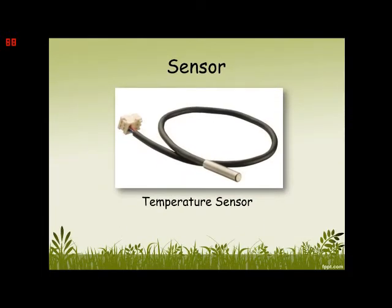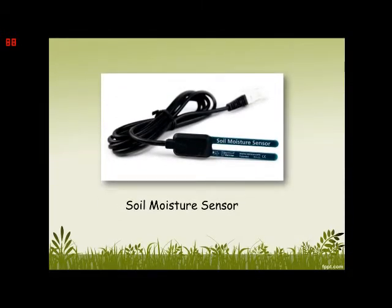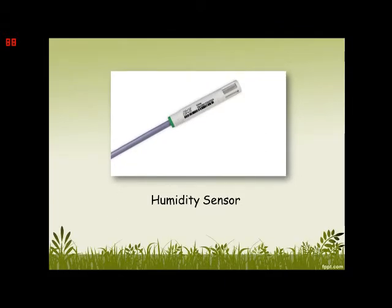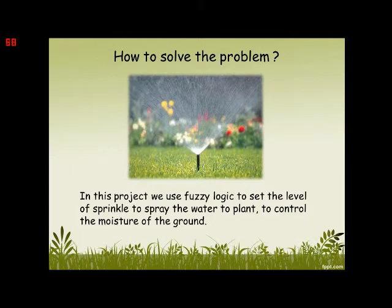We use three sensors for this project. First, a temperature sensor to measure the temperature in the air. Second, a soil moisture sensor. And third, a humidity sensor. In this project, we use Fuzzy Logic to set the level of the sprinkler to spray the water to the plant, and this is used to control the moisture of the ground.